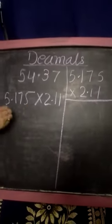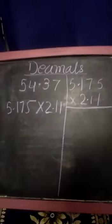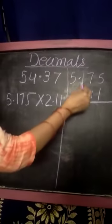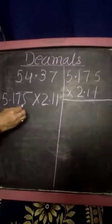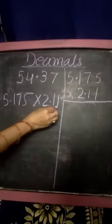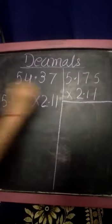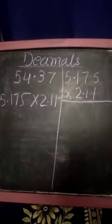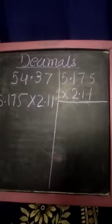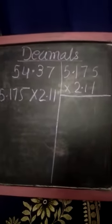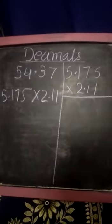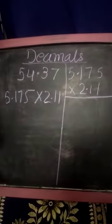First is multiplication of decimals. How to do it? We have 5.175 into 2.11. We have to write in the rough area and then we start multiplying. Always remember, we have to start from the right side.